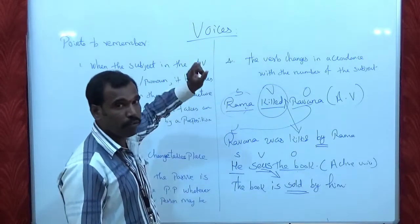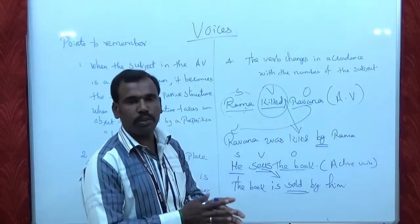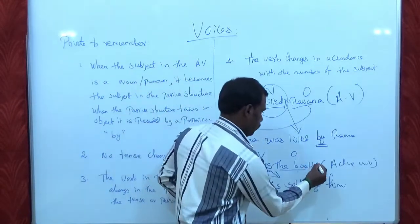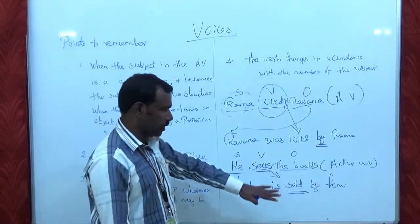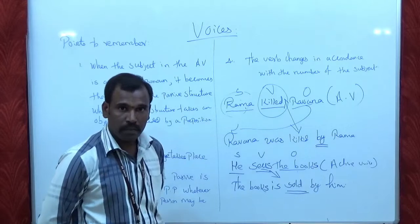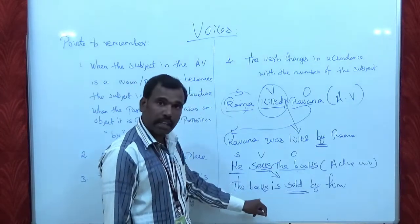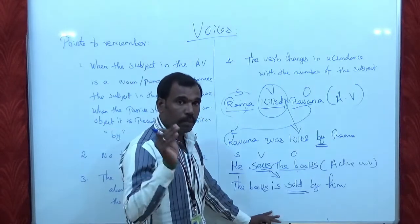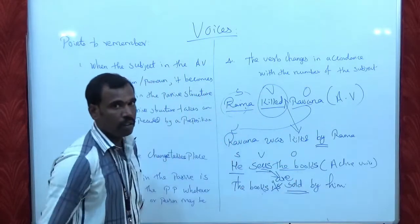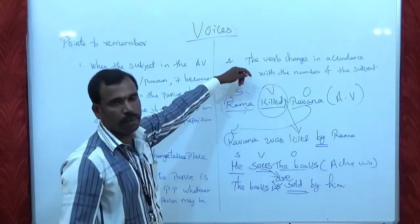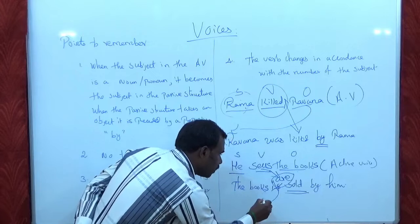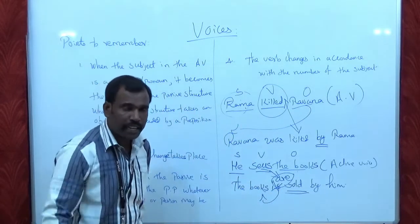The fourth important point is about number agreement. For example: He sells the books. When you change this active form into passive, you cannot say 'The box is sold by him' — that is wrong. Because the noun has changed in number, the verb should also change automatically. So the correct passive form is: The books are sold by him. The verb changes in accordance with the number of the subject.